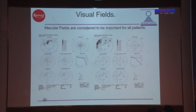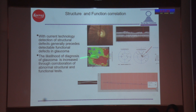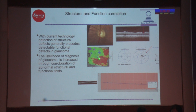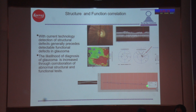With current technology, detection of structural defects generally precedes detectable functional defects in glaucoma. For structure-function correlation: you can see the optic disc damage correlating with the retinal nerve fiber layer notch, and the ganglion cell layer showing how closely the damage has come to the fovea. At 12 degrees, you can see how vividly the visual field loss is captured and how close it is to the fovea, versus the 30-degree field. When doing serial RNFL values over a long period, you get a regression showing how the deterioration has taken place. Every time you do an RNFL, please make sure to check segmentation, as it can change from one test to another.